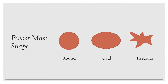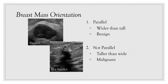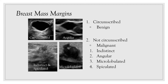Shape options are round, oval, or irregular. For orientation, parallel means wider than tall — usually associated with benign masses — while not parallel, taller than wide, is usually a more suspicious finding. Breast mass margins can be circumscribed or not circumscribed. Circumscribed margins are usually more benign, whereas not circumscribed are more suspicious. Descriptors in this category include indistinct, angular, microlobulated, and spiculate.